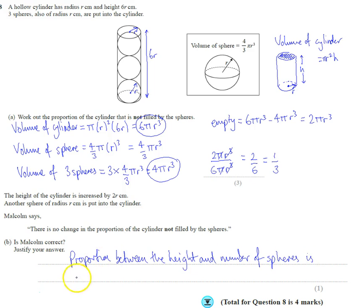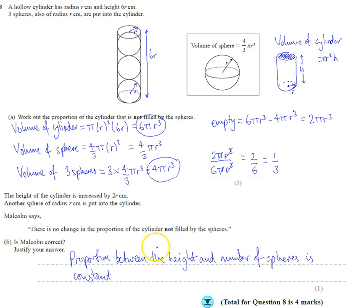The amount of empty space is always going to be one third. The proportion between the height and number of spheres means the amount of space filled is always two thirds and the amount of space empty is always one third — because the proportion between the height and the number of spheres is constant.